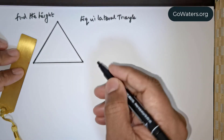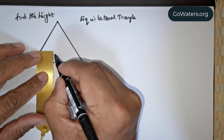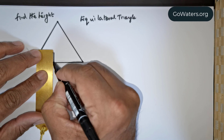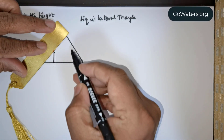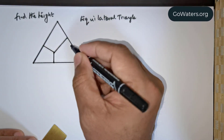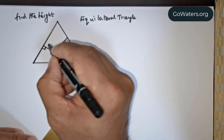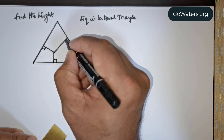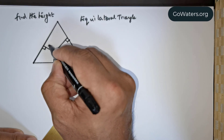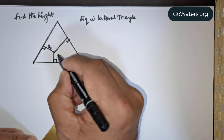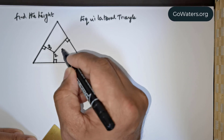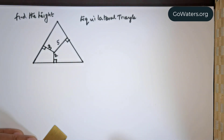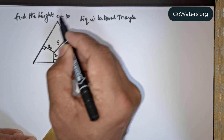We are given the following. The shape of the interior parts of the triangle is given in this fashion. This is 90°, this is 90°, and this is 90°. This distance is 3 units, this distance is 2 units, and this distance is 5 units.